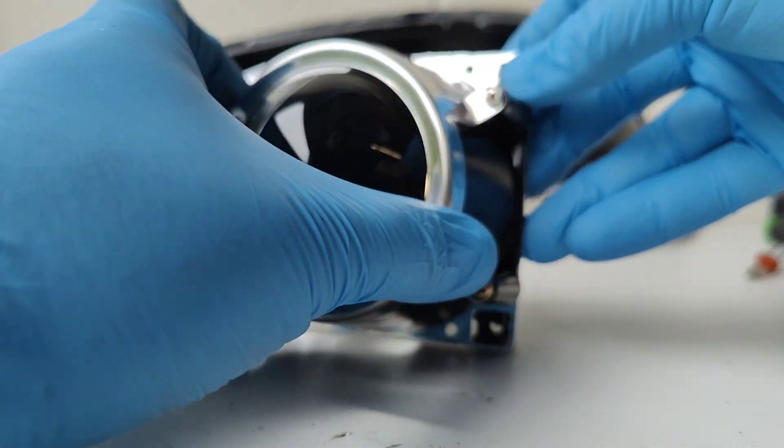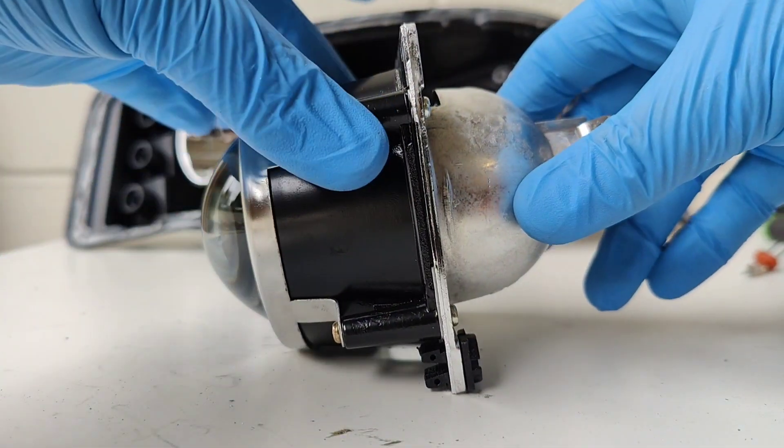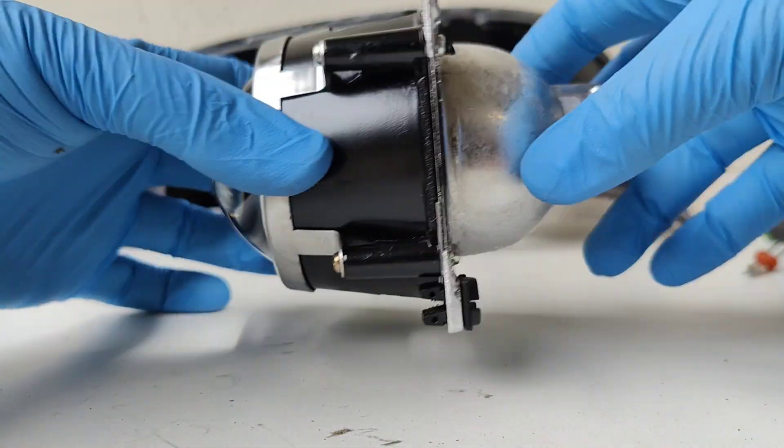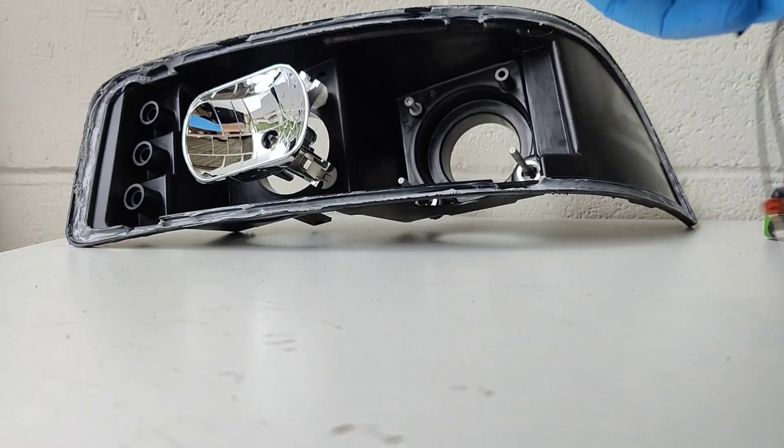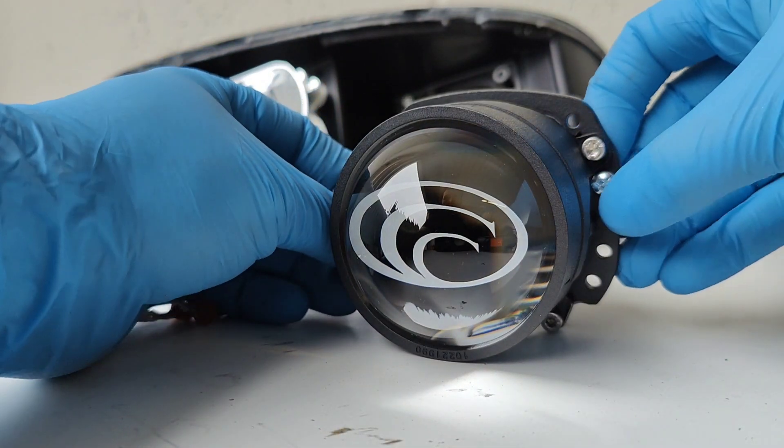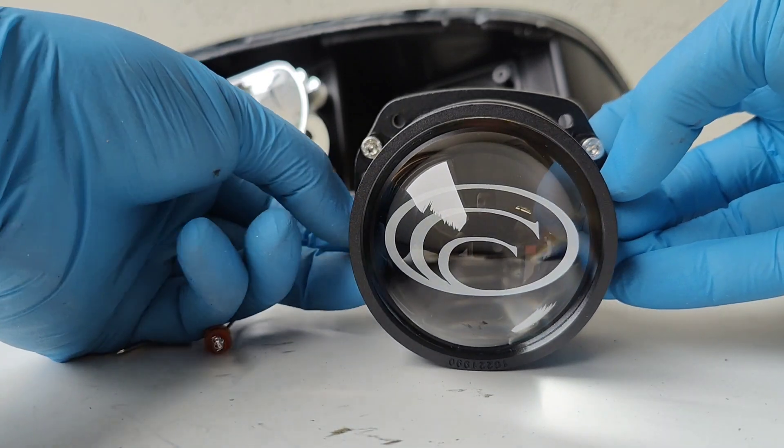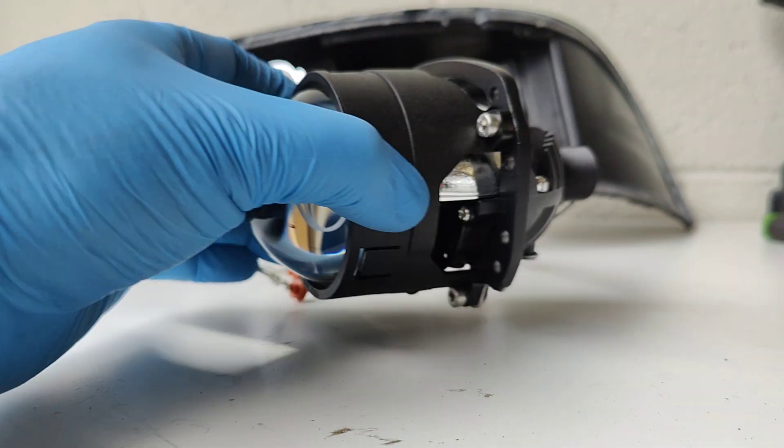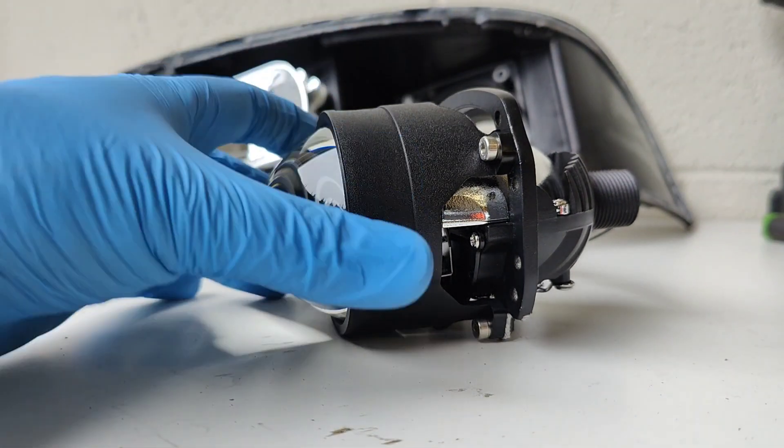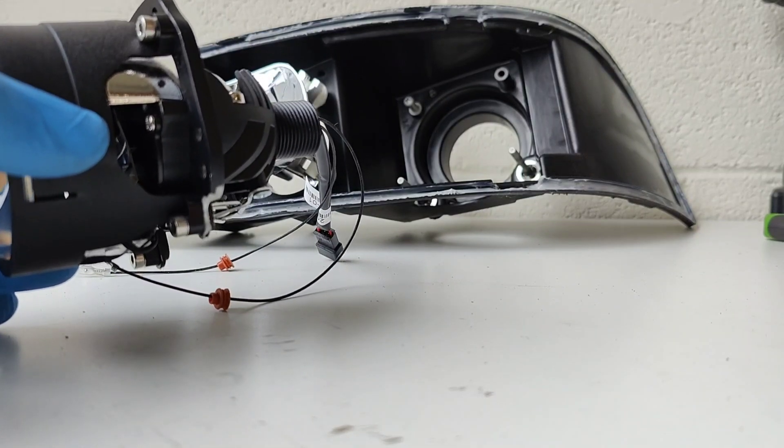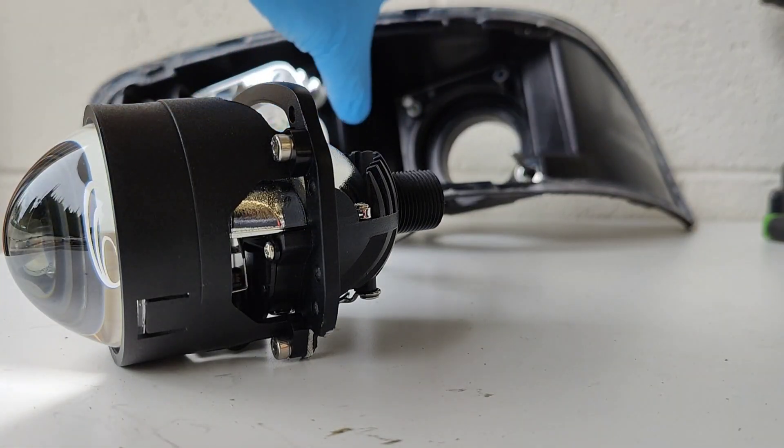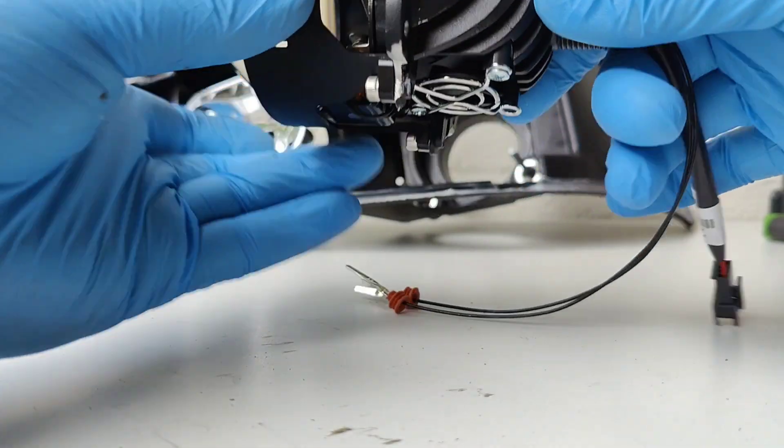We're going to take apart this projector and use the A1A Retrofits E1 projector because it is mini H1 styled and extremely versatile for a housing like this. You need something very compact to fit in these housings. Micro D2S will fit, but anything G5 or up will not fit.